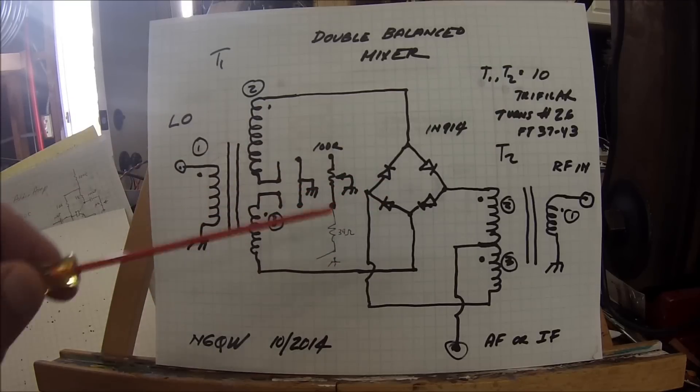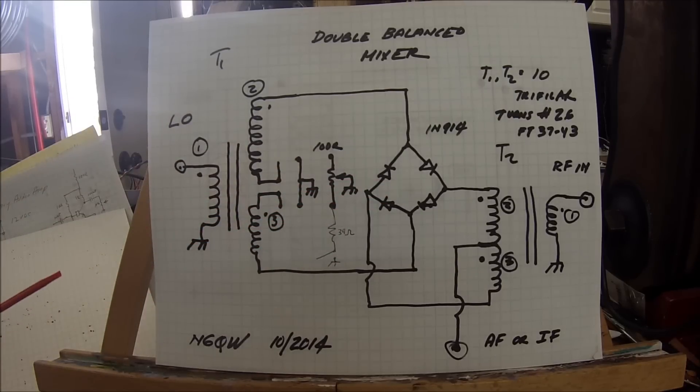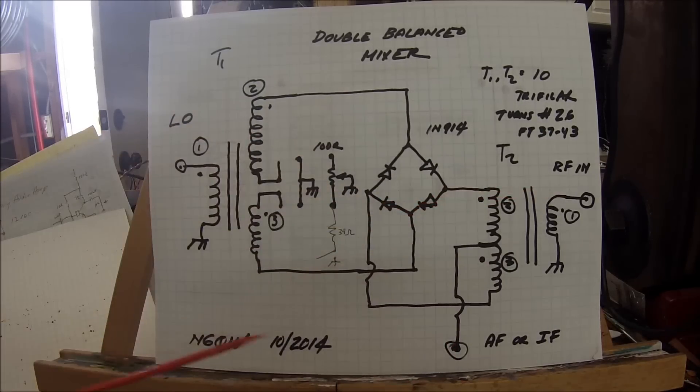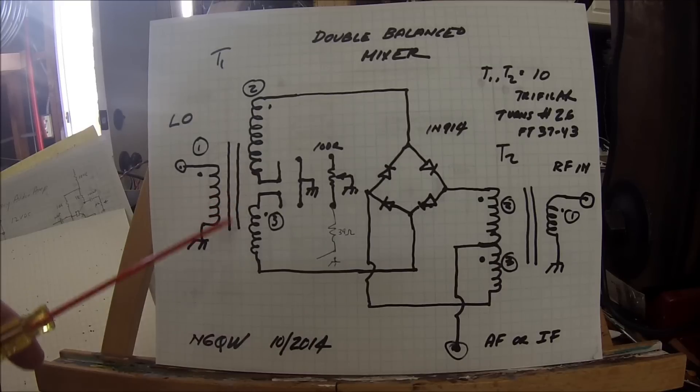The construction of the transformer and selection of the diodes determine the critical performance of a double balanced mixer. The double balanced mixer has the advantage that the output, which is either AF or IF, is comprised solely of the sum and difference of the local oscillator and RF input. With only a single balanced mixer you may get other mixer products.